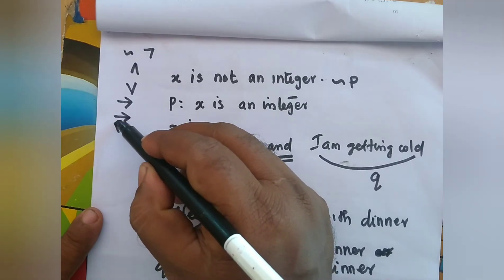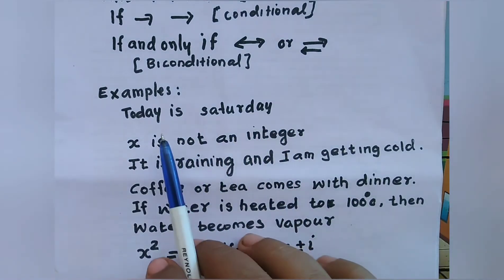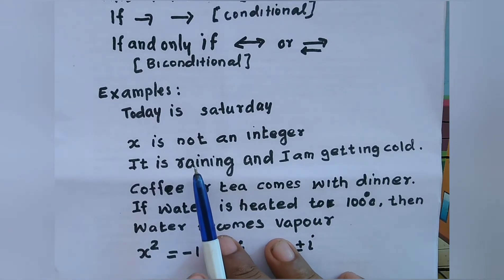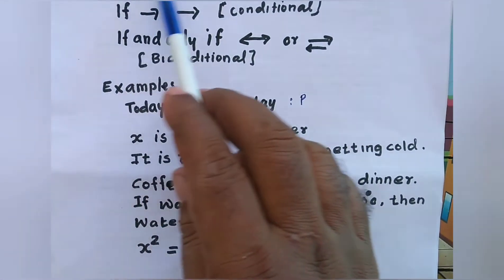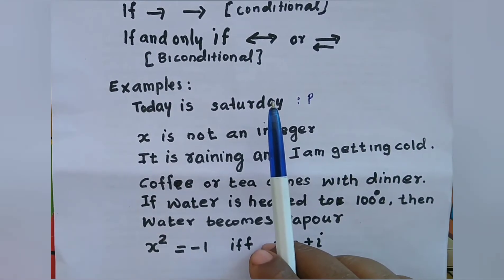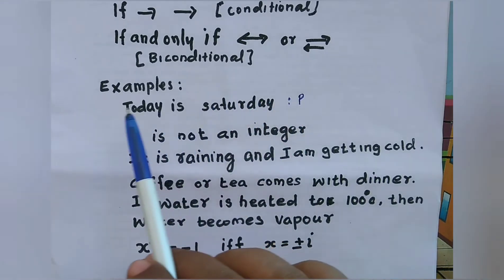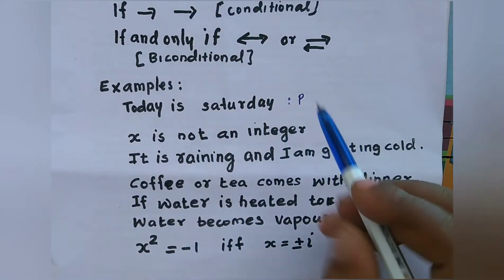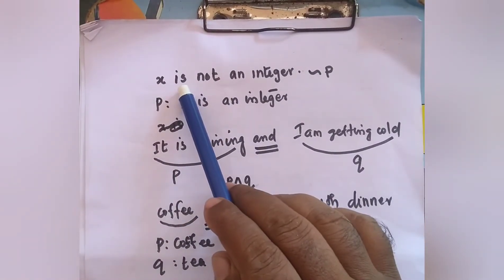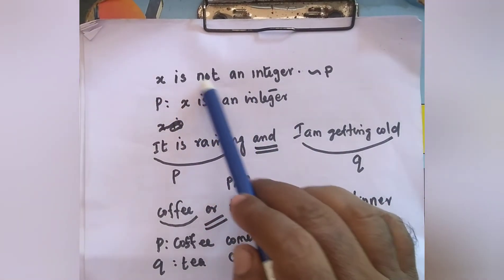For the first example: 'today is Saturday.' There is no 'if', 'or', 'and', 'if and only if', or 'not' term in this sentence. This is a single statement, so we represent it simply as P.